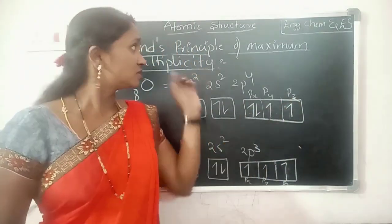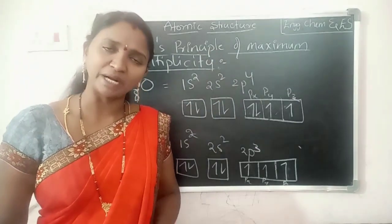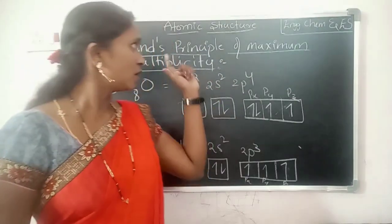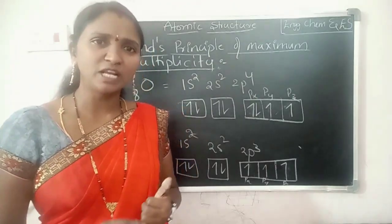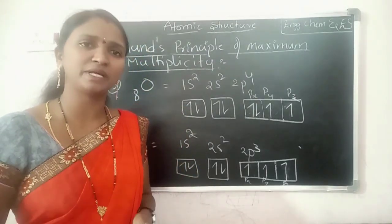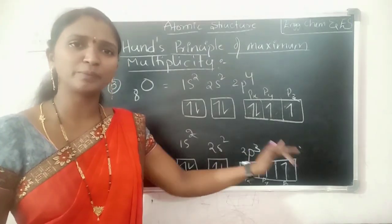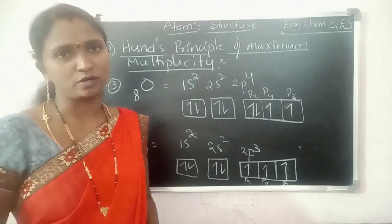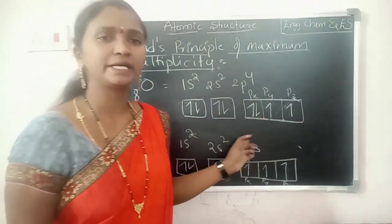This is about Hund's Principle of Maximum Multiplicity. Hund's principle states that the pairing of electrons into any orbital cannot take place until each subshell of the orbital can have at least 1 electron. Only then can pairing begin.